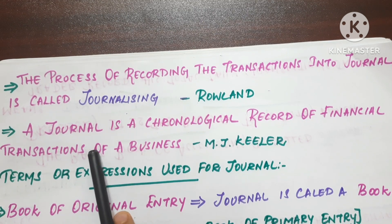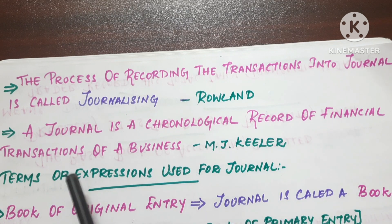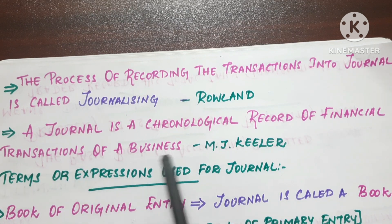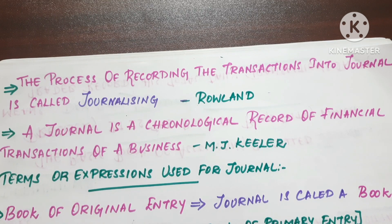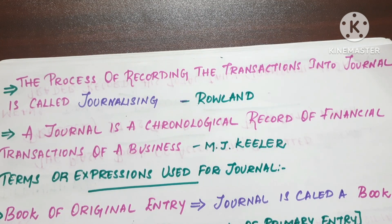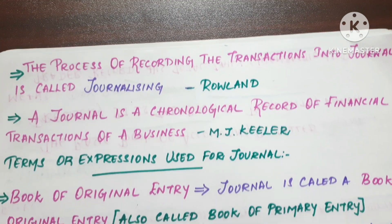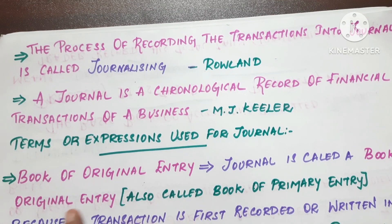The journal is a chronological record of the financial transactions of a business. In the introduction, we record all financial transactions in chronological order.